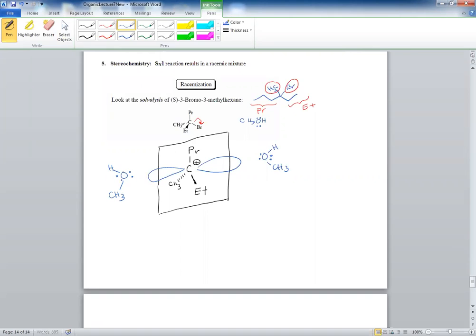Bear with me here. Think about it: if it attacks from the back, it's going to have a different configuration than from the front. Whatever you think is the front, whatever you think is the back. You have an empty P orbital. So that results in the following.